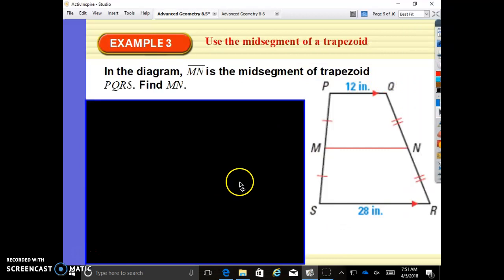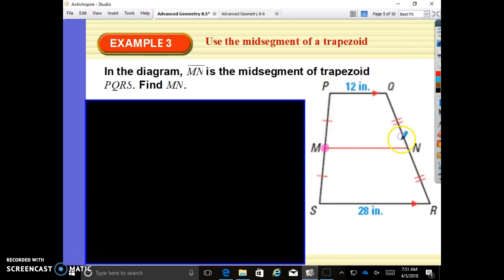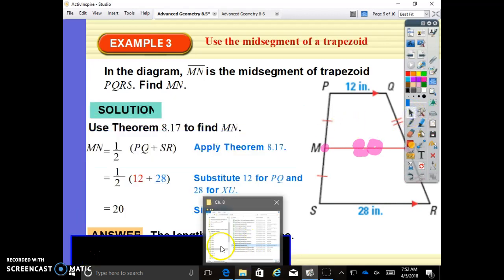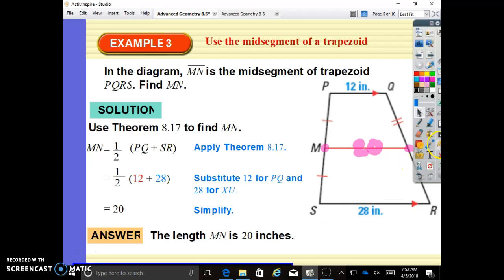In the diagram, MN is the mid-segment of trapezoid PQRS. Find MN. So what do we know about mid-segments? A mid-segment is made up of mid-points. It cuts this into two equal parts, cuts this side into two equal parts, and the mid-segment is simply the average of these two. So if you take this and this, add them, and divide by two, you get the length of MN. So 28 plus 12 is 40. Divide by two, 20. Your mid-segment is 20 inches. This is theorem 8.17.